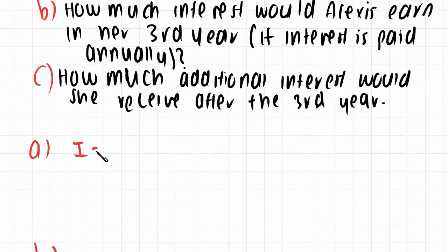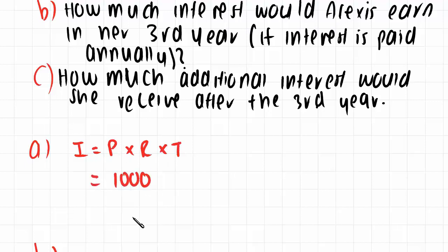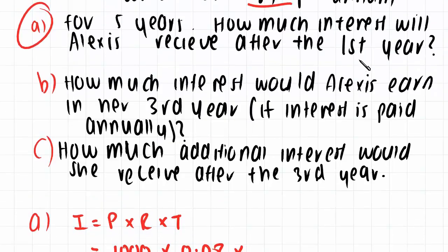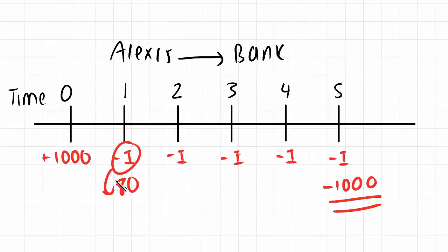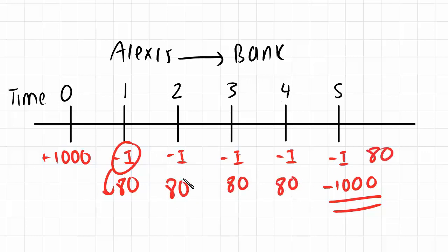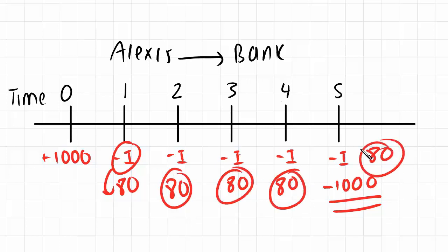I = PRT: the principal is $1,000, the rate is 8%, and the time period up to year one is 1, giving $80. This means she earns $80 at the end of year one in interest. Since simple interest is the same every year, she also earns $80 at year two, $80 at year three, $80 at year four, and $80 at year five.